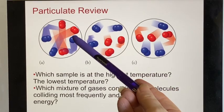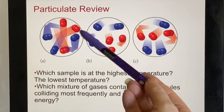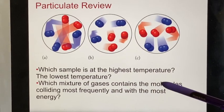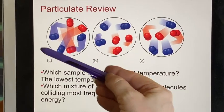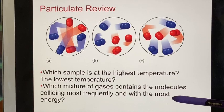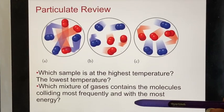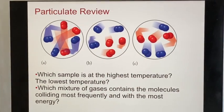And then as it turns out, if it is moving faster, it's going to encounter another molecule more often. So this one, the one that is at the highest temperature is going to have the molecules collide most frequently and with most energy.